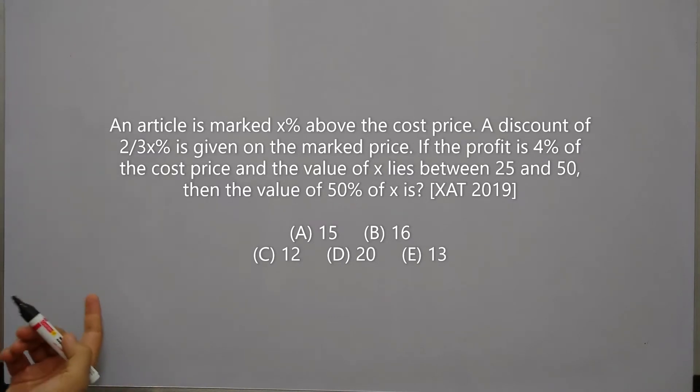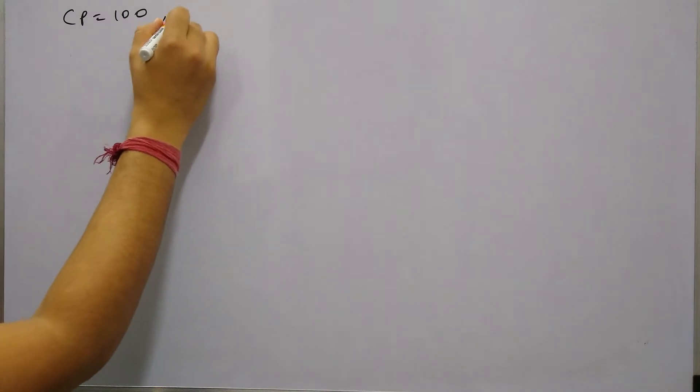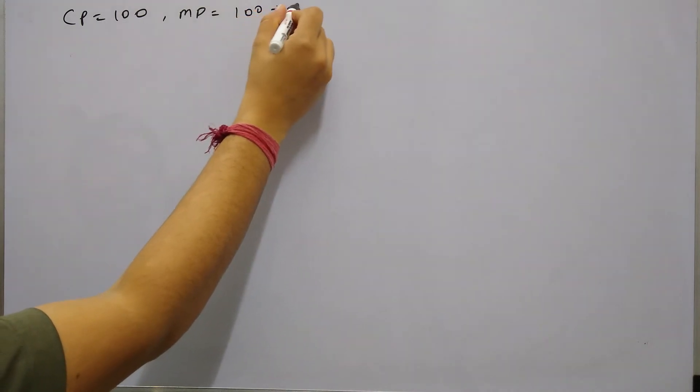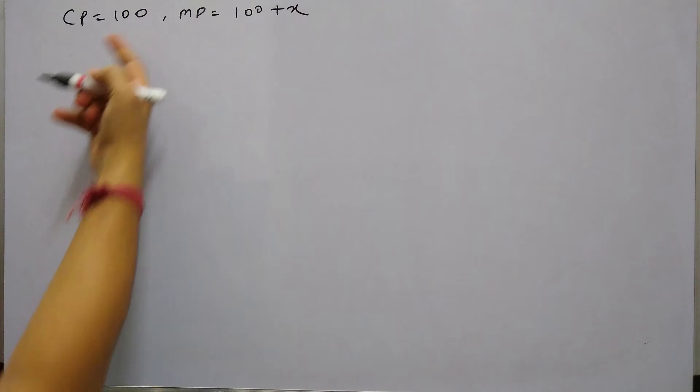So let cost price be 100 rupees. If cost price is 100 rupees, then the marked price will be MP or MRP will be 100 plus x, because it is x% more than the cost price.